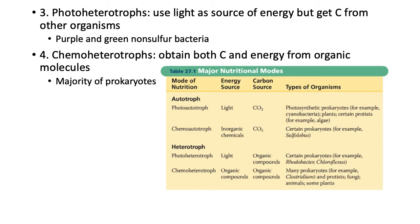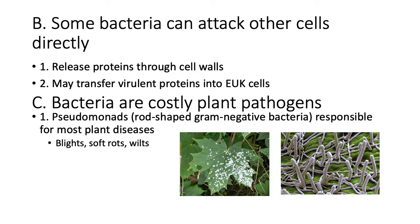Bacteria can cause disease in humans and plants by attacking cells directly, releasing proteins through cell walls, or transferring deadly proteins into eukaryotic cells. Most plant pathogens are Pseudomonas species, causing blights, soft rots, and wilts. You can see in this maple leaf image the infection, and zooming in reveals the bacterial structures.